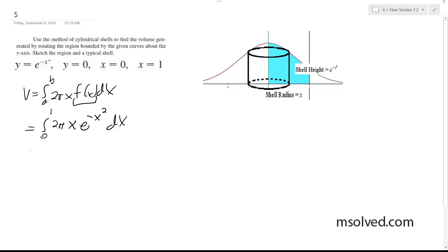All right, so we're going to use substitution here. u is going to be equal to x squared, du is going to be equal to 2x dx, and from 0 to 1.